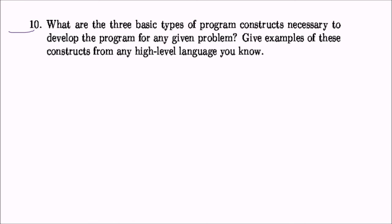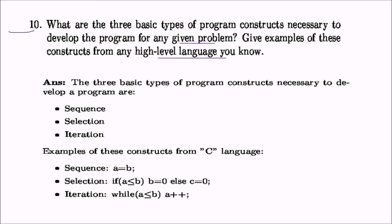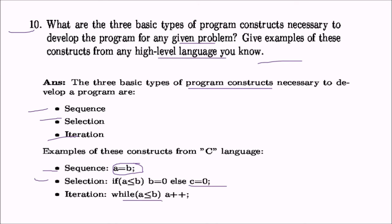Question ten asks about the three basic types of program constructs necessary to develop a program for any given problem, with examples from a high-level language. It has been realized from past experience that only three program constructs are necessary to implement any logic: sequence, selection, and iteration. In C, sequence is an assignment instruction, selection is an if-else statement, and iteration is a while, do-while, or for loop.